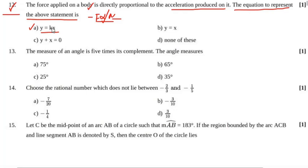Question number 12: The force applied on a body is directly proportional to the acceleration produced in it. The equation representing this statement: F ∝ a means F = ka. If y denotes force and x denotes acceleration, then y = kx. The correct option of question number 12 will be y = kx.